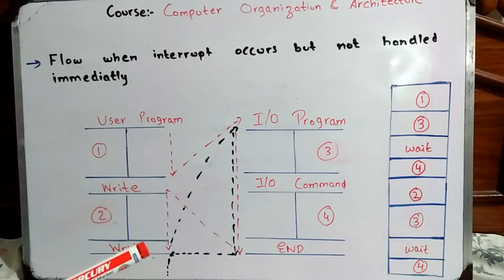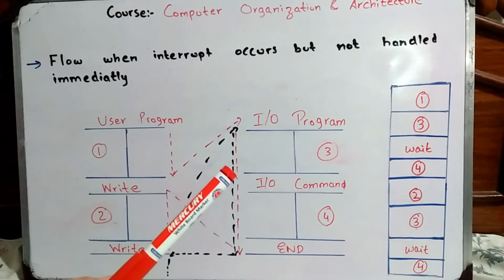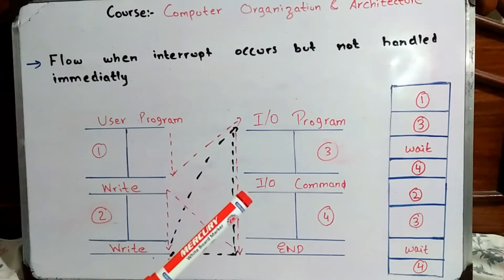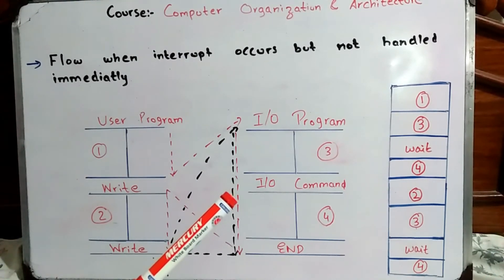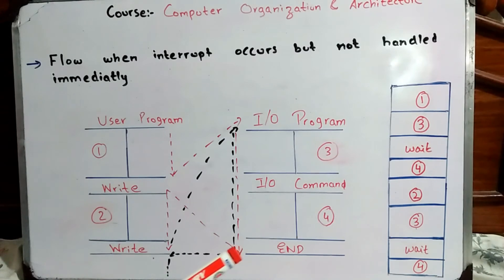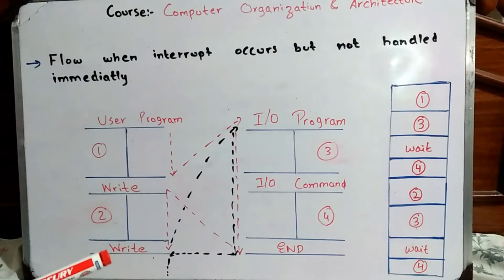Following the red dotted line: the CPU needed to send to the output device, so it was requested to go to the I/O program. The I/O program requests to assign the output device, then goes to I/O command. The CPU is waiting here — it waited until the output device was assigned. Once assigned, the CPU returned to execute the remaining statements and came back to the point where the I/O program flow had left off, and then the set of instructions was executed.